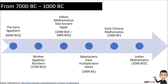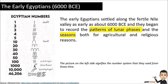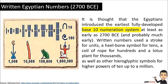Starting with the early Egyptians: the early Egyptians settled along the fertile Nile Valley as early as about 6000 BCE and began to record the patterns of lunar phases and the seasons, both for agricultural and religious reasons. The picture on the left side shows the number system that they used. From those types, they used the staff, keel, coil of rope, lotus flower, and pointing finger.